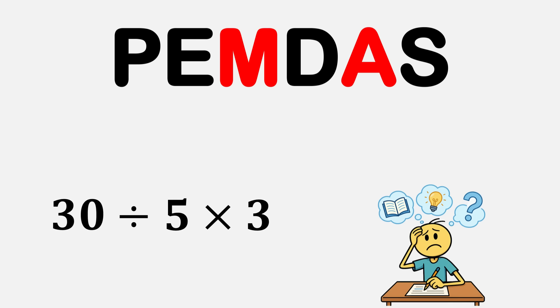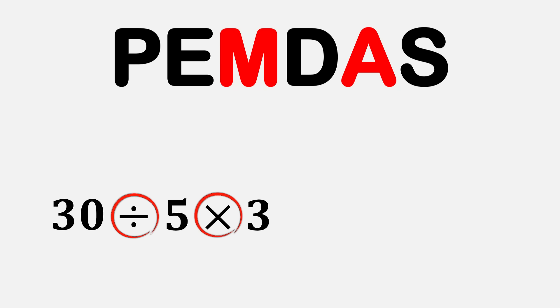Then comes the part that trips up most people: Multiplication and Division. These are on the same level in priority, so you don't always multiply first just because it comes earlier in the phrase. Instead, you scan the problem from left to right and do whichever of the two appears first. For example, look at this expression: 30 divided by 5 times 3.